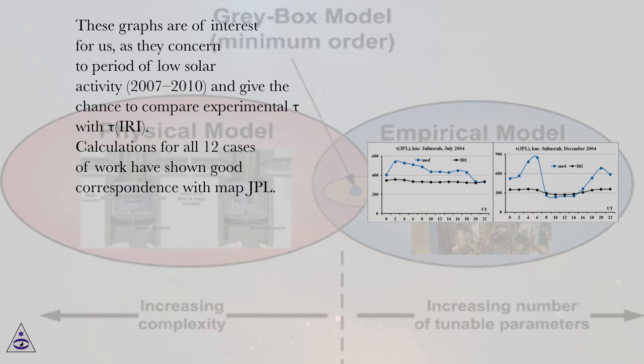These graphs are of interest for us as they concern the period of low solar activity, 2007 to 2010, and give the chance to compare experimental tau with tau IRI. Calculations for all 12 cases of work have shown good correspondence with map GPL.